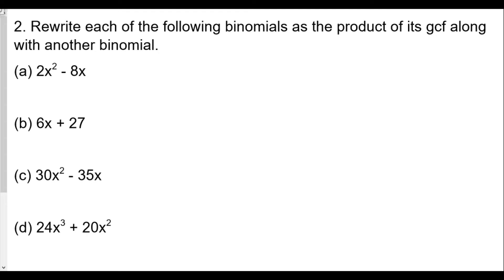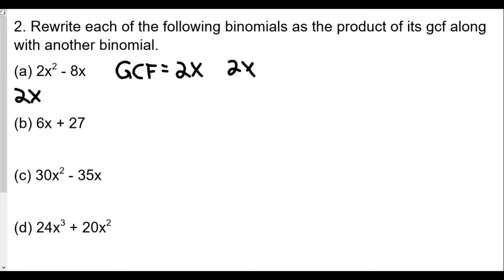Question 2: rewrite each binomial as a product of the GCF with another binomial — this time some terms include variables. For the GCF with variables, we pick the variable with the smaller exponent. For part (a), with 2x² − 8x, the numerical GCF is 2, and between x² and x the smaller exponent gives x, so the GCF is 2x. Dividing the first term: 2x² ÷ 2x = x.